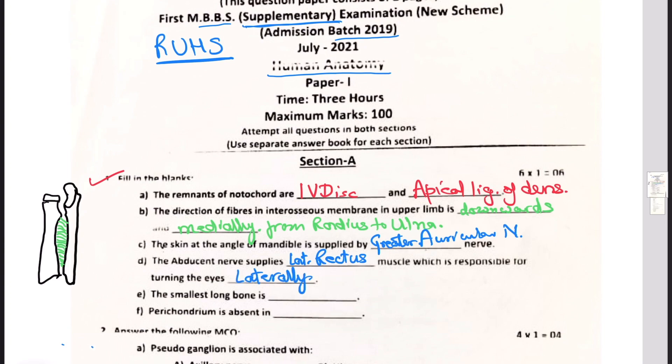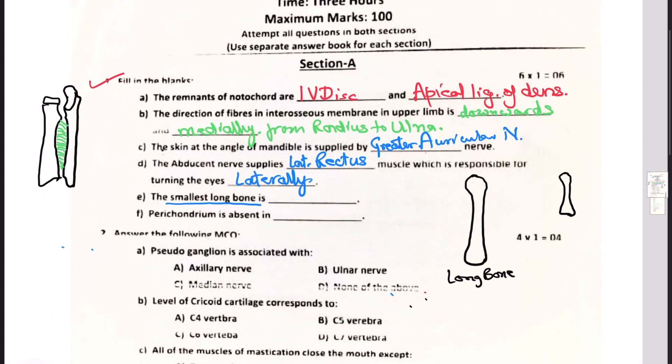The smallest long bone is dash. Now this is a bit controversial question because smallest long bone is not being clearly mentioned precisely. Long bones are two types: here I have drawn two long bones - this we call as long bone and this is a miniature long bone.